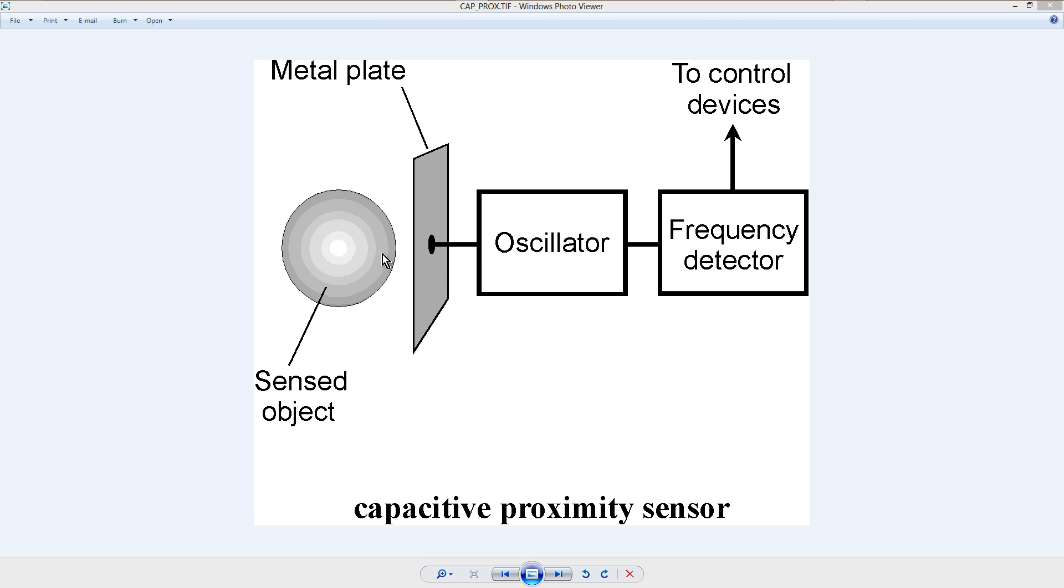the mutual capacitance between the plate and the object will affect the frequency of the inductance capacitance circuit in the oscillator,